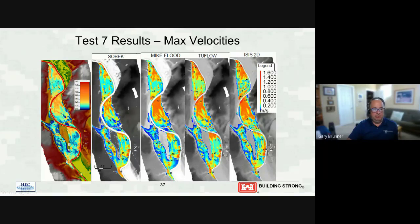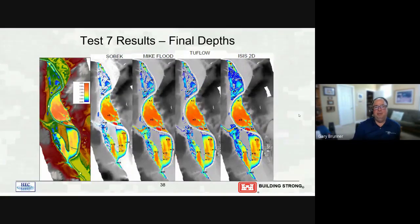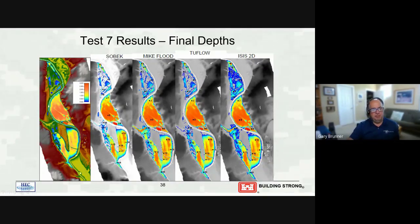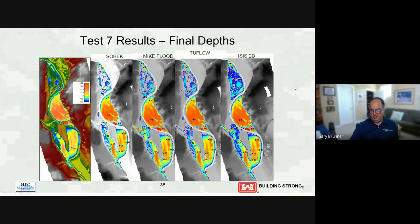RAS was able to map both the river and the floodplain simultaneously, whereas the other models don't show any mapping in the river. The final depths at the end of the simulation show water going in and then out of the two-dimensional flow areas — except for floodplain two where it got trapped. Floodplain one's final depth plot ranges from zero to three meters.